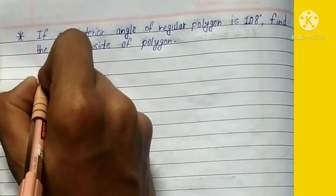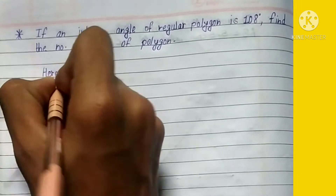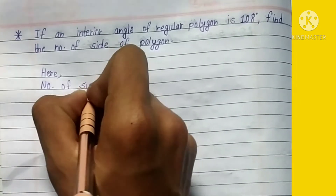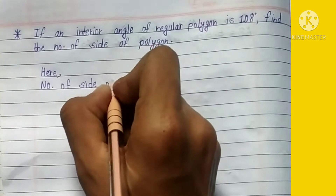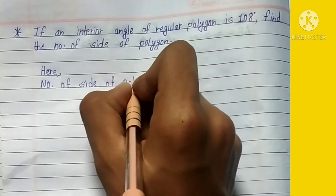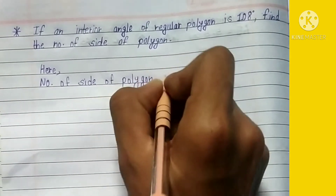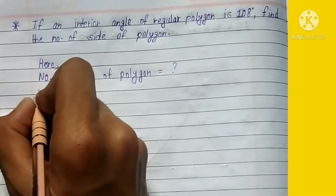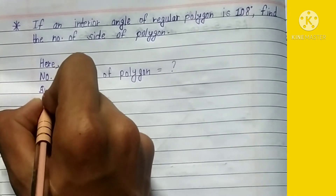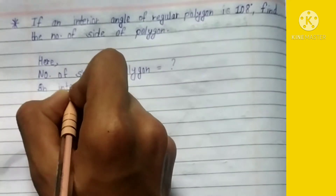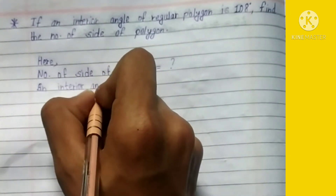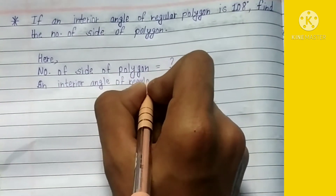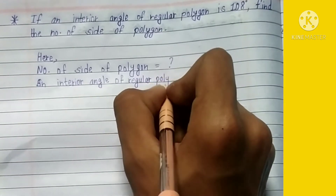If an interior angle of a regular polygon is 108 degrees, find the number of sides of that polygon. Here, the number of sides of the polygon equals what? So here, an interior angle of a regular polygon, according to the question, is equal to 108 degrees.